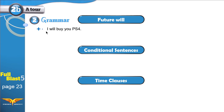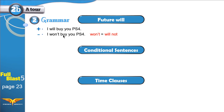Now let's see how we can turn this positive will sentence into negative. All we do is add 'not' to 'will': I will not buy you PlayStation 4. Or I can say I won't buy you PlayStation 4. That's the same thing — 'won't' is the same as 'will not.' So it should be easy to make negative sentences.